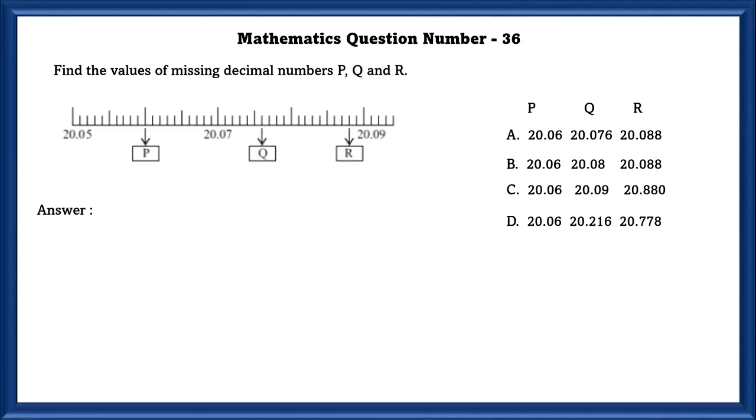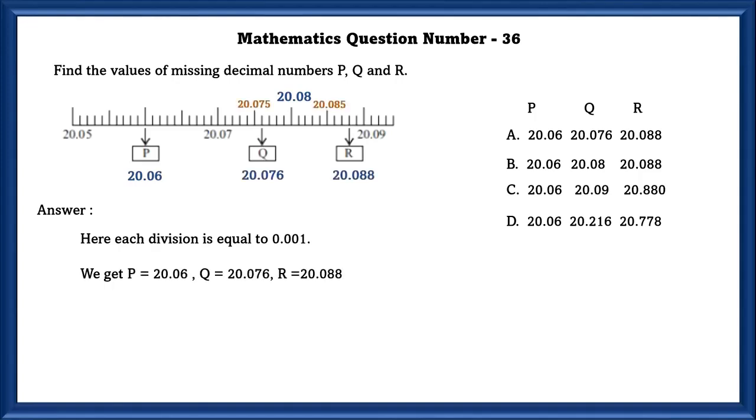Mathematics question number 36. Find the value of missing decimal numbers P, Q, and R. Here each division is equal to 0.001. So increasing in that order, we see that P is 20.06, and Q is 20.076, and R is 20.88. So the A option is correct.